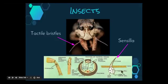Sensilla are present in the male mosquito, for instance, and are sensitive to the vibrations made by the beating wings of the female mosquito.